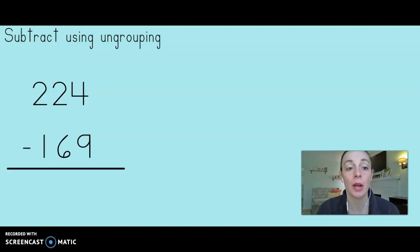The next problem is two hundred twenty-four minus one hundred sixty-nine. Let's start over in the ones place. Four minus nine. Hmm, nine is bigger than four, so I won't be able to take four and give you nine. That means I need to ungroup. Let's go to our tens. Take one of them away and give those ten ones over to the ones place. Now I have fourteen minus nine. I got five.